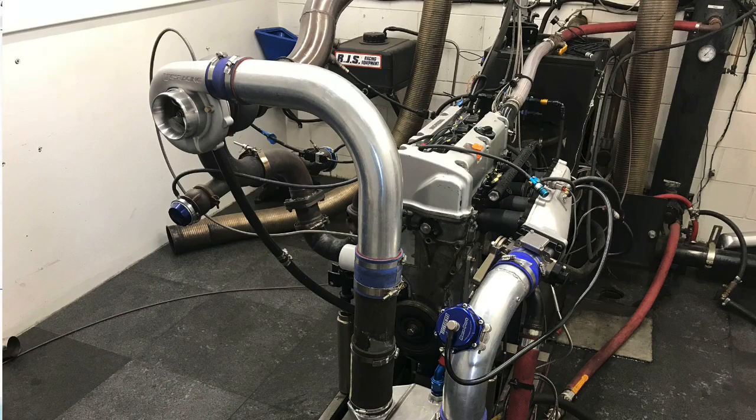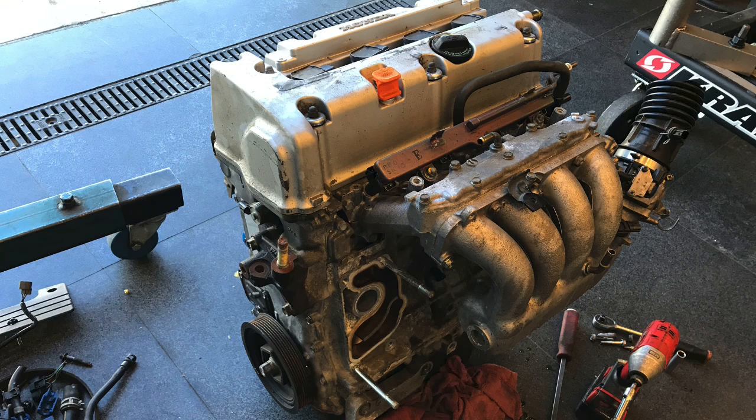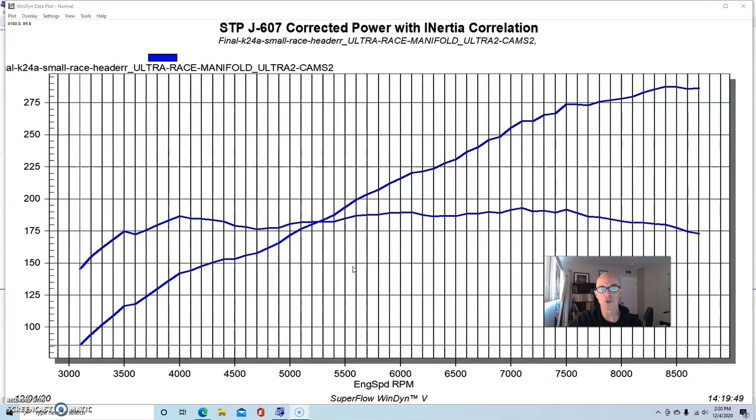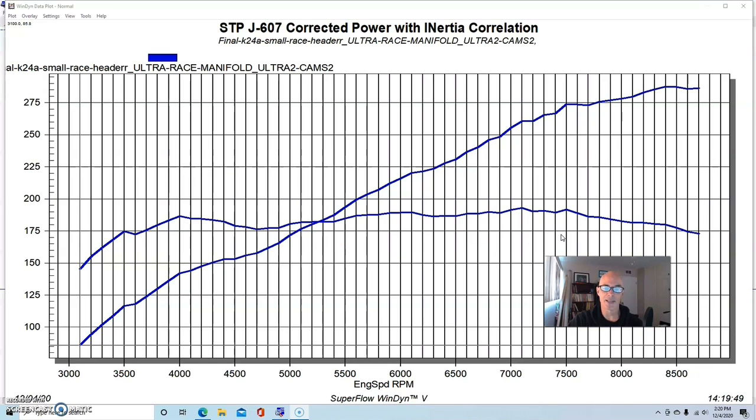The first of our three combinations we applied our 78/75 Gen 2 turbo from VS Racing to was a K24A2 Honda motor. It was a JDM version that I bought from a local JDM supplier, and we ran all this testing with the guys at Skunk2. This particular motor did not have any internal changes - I didn't change the pistons or connecting rods or anything, didn't even put ring gap in it.